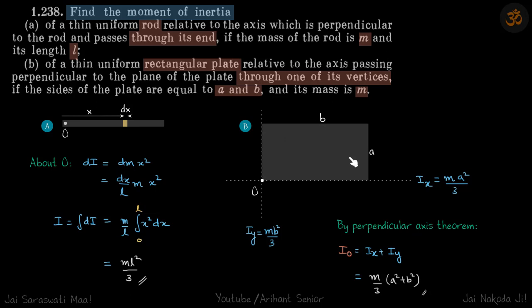We can find the moment of inertia of this plate about this axis. About this axis, the length of the equivalent rod is b, so moment of inertia about this axis Iy is equal to m b square by three.